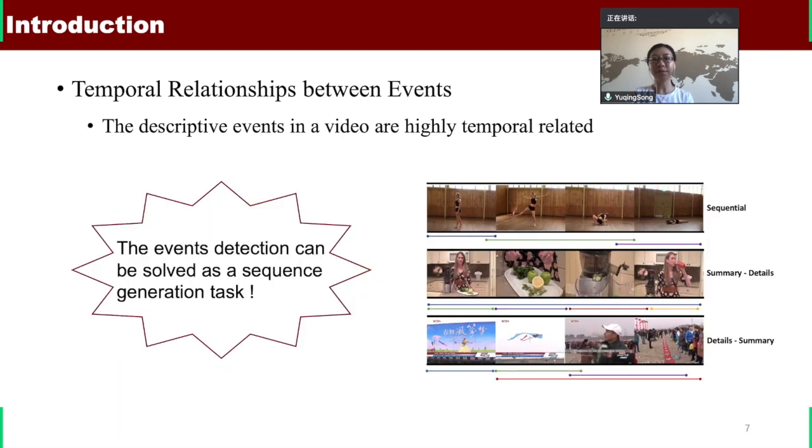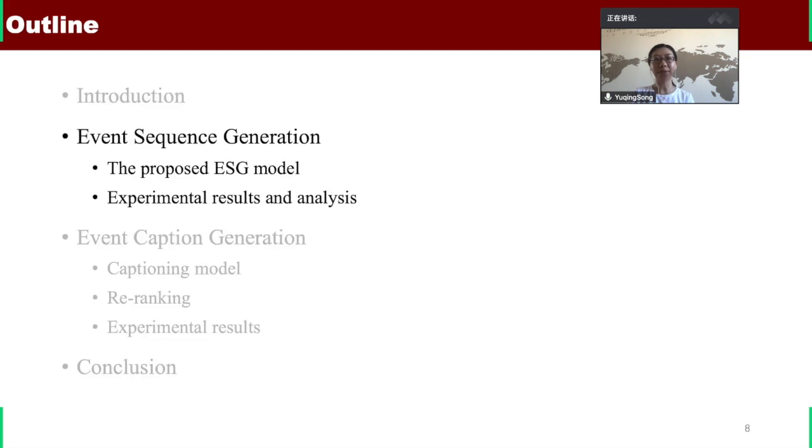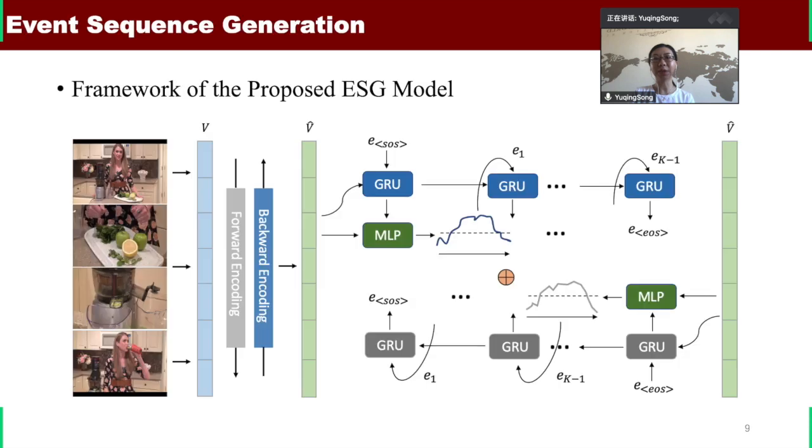Therefore, we can exploit the temporal relationships between the events to generate the event proposals. The event detection can be solved as a sequence generation task with one-pass generation. Based on above analysis, we propose a novel and simple event sequence generation model by fully exploiting the temporal dependence between the events.